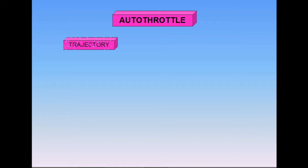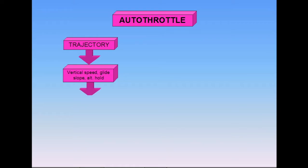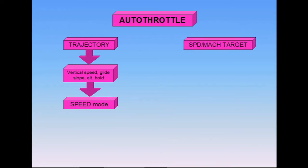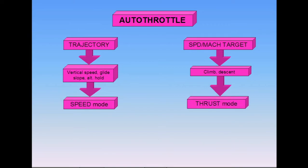The Autothrottle modes are automatically linked to Autopilot Flight Director vertical modes. When the Autopilot Flight Director vertical mode commands a trajectory — such as a vertical speed, a glide slope, or altitude hold — the Autothrottle is in Speed mode. When the Autopilot Flight Director vertical mode adjusts the aircraft pitch in order to maintain a target speed or Mach, such as during a climb or descent, the Autothrottle is in Thrust mode.